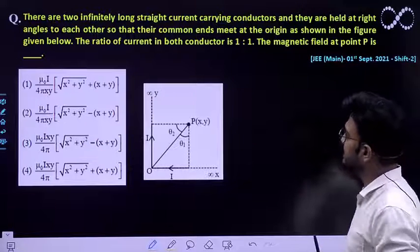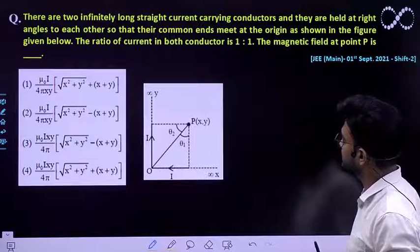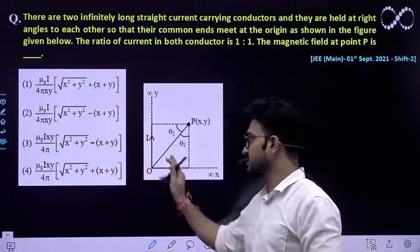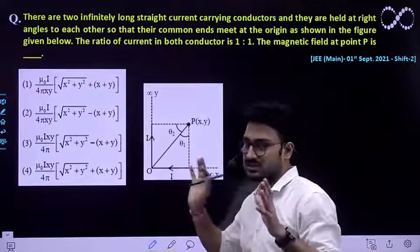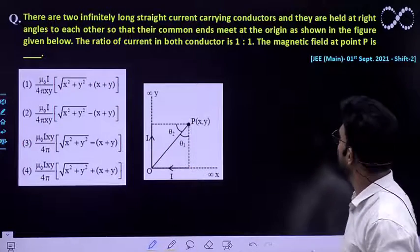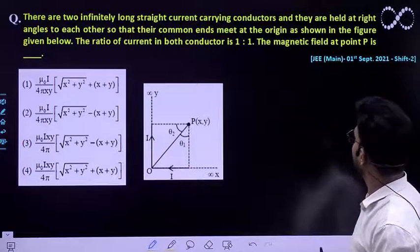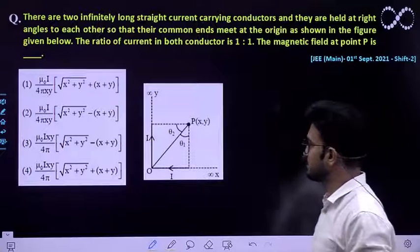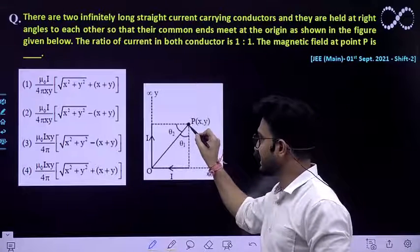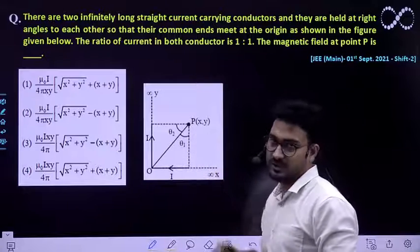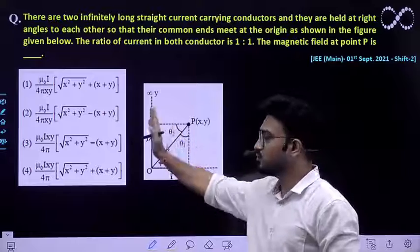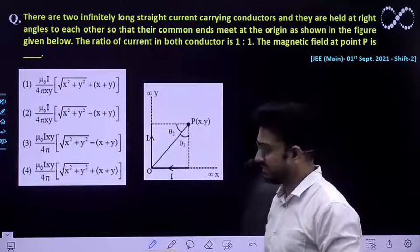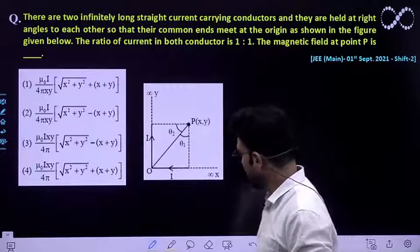Now the ratio of the current in both conductors is 1:1, so the current in both is the same — let it be I. The magnetic field at a point P is what we need to find out — what would be the magnetic field at this point P because of these two wires.